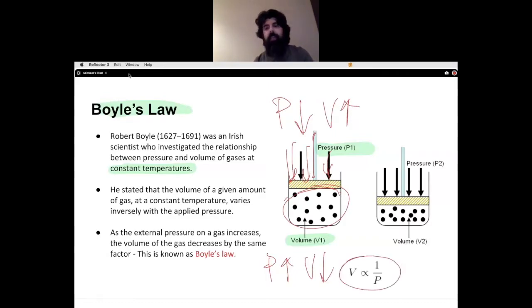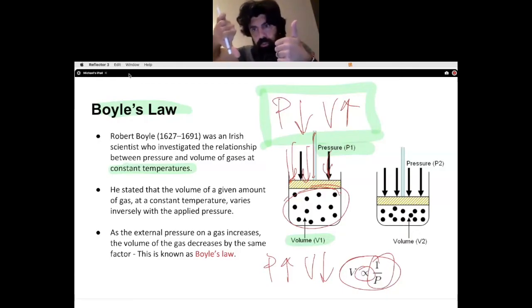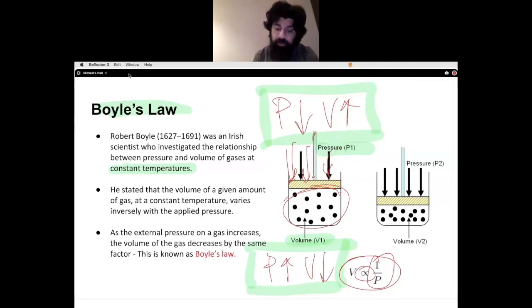When we have this kind of relationship, V is inversely proportional to 1 over P. Just understand this: as pressure goes down, volume goes up. That's the inverse proportionality. As one goes up, the other has to go down. As one goes up, the other one will go down, and that's what is considered Boyle's Law.